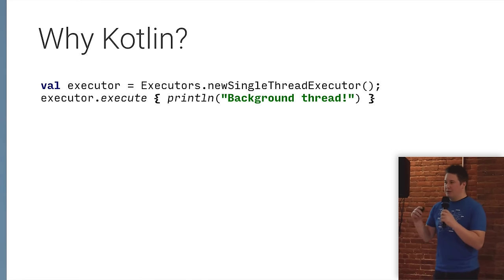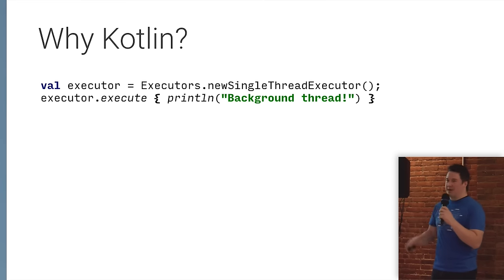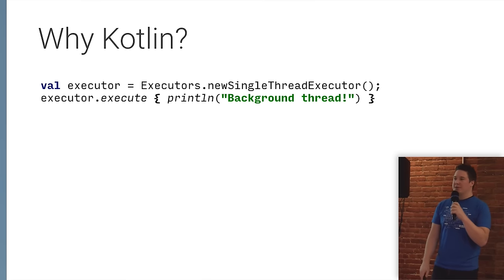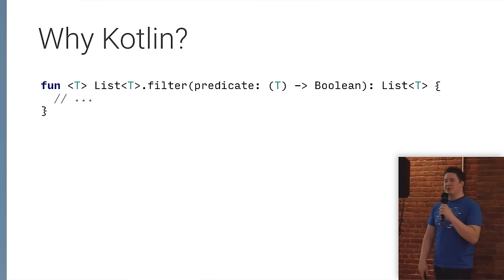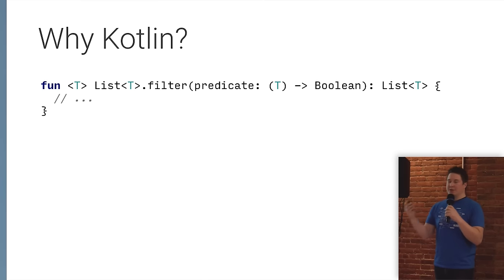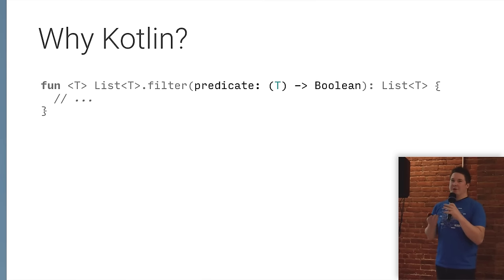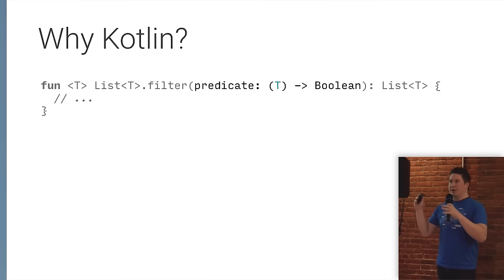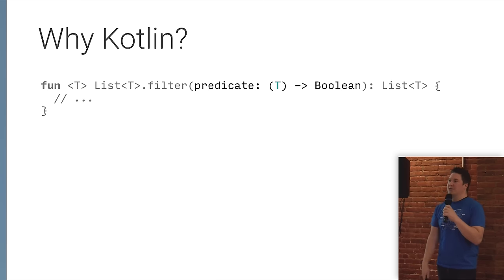Kotlin has lambdas. These lambdas end up materializing into anonymous classes by the compiler. You can execute code by just passing a lambda instead of having the boilerplate of defining the anonymous class directly. There's also higher-order functions — a function that can accept a function or return a function. For example, writing a filter on a list: that filter accepts a function that takes items and returns a Boolean. You don't have to declare an interface; you can just declare that it takes a function as a type.